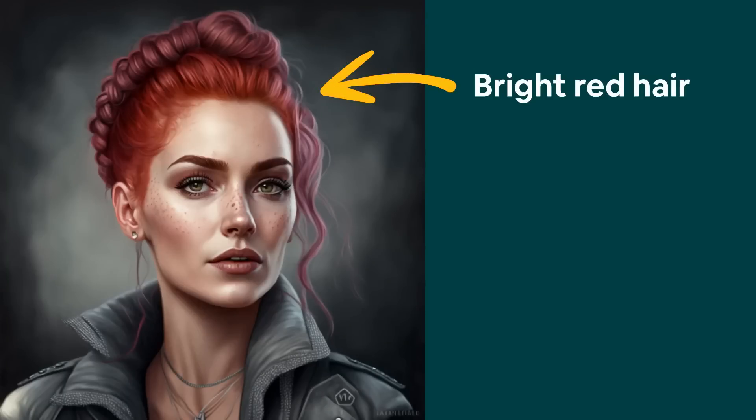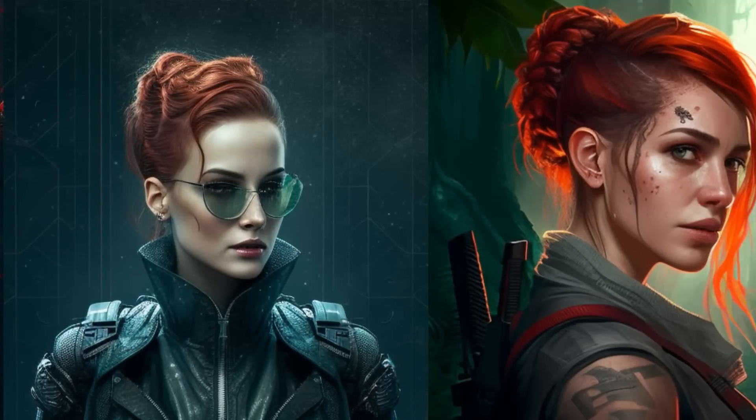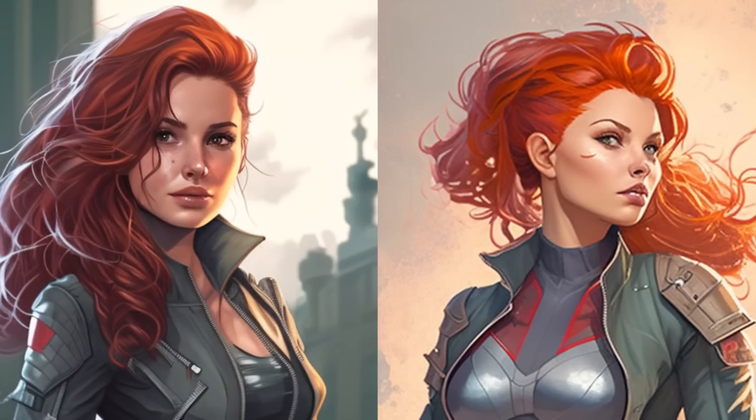In last week's video, we created our very first fictional character in Midjourney. We named her Carla Caruso and decided to give her bright red hair in a braided bun hairstyle and a grey leather jacket. We also created portrait shots of Carla in different locations, we dressed her up according to movie themes, and we also changed the style of the image.